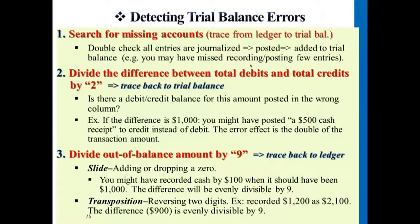For each and every business activity, ask yourself: what are the accounts affected? In this week's homework there are a few transactions where you may see more than two accounts affected. For example, a corporation paid $1,000 cash to pay off rent expense $500, advertising expense $500, and other types of expenses. If you see more than one account, list them and apply the debit and credit rule. Assets always increase on the left (debit), liabilities on the right (credit), and equity on the right (credit).